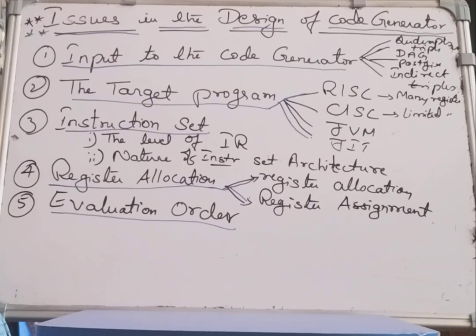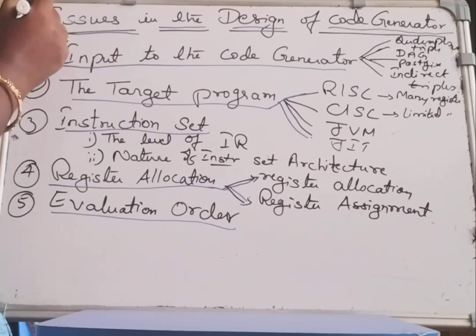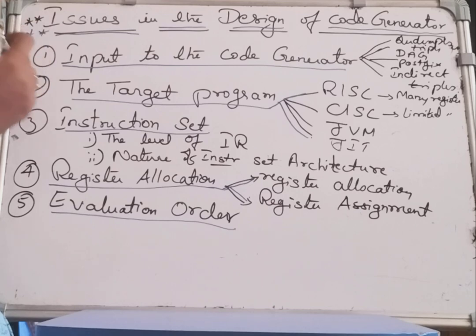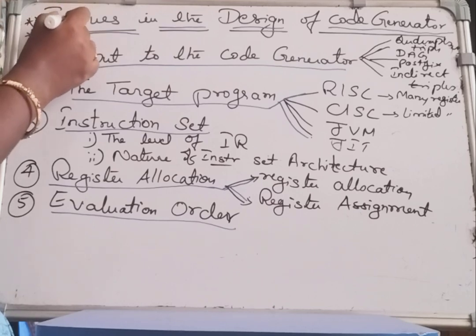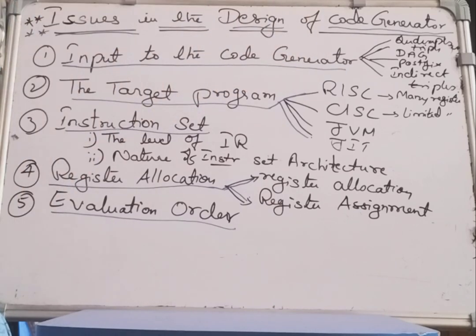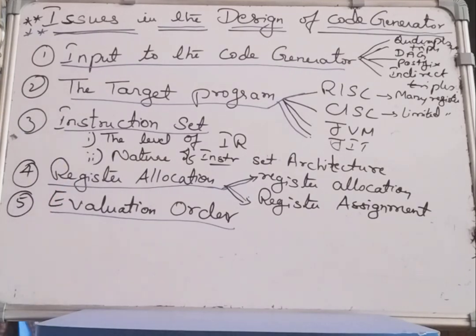Hello everyone, welcome to my channel, this is Vijayanashmi. Today we are going to discuss a very important topic which will be for 8 to 10 marks — the input module — that is, issues in the design of code generator. We have to consider 5 points while explaining the issues of the code generator. We know that it is the last phase of the compiler, and the input for this code generator is the front end phase of the compiler.